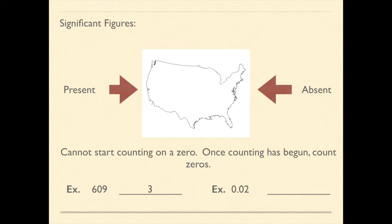For the next example, 0.02, because there is a decimal place, I'm going to be counting from left to right. So I look at that first zero and I know that I cannot start counting on a zero. So I'm not going to count that zero. I'm not going to count the zero in the tenths place, but I can count that two. And so I have one significant figure.